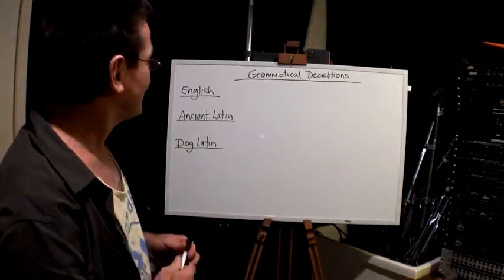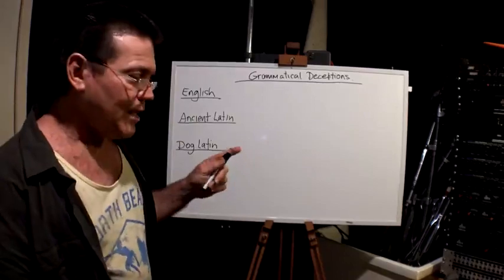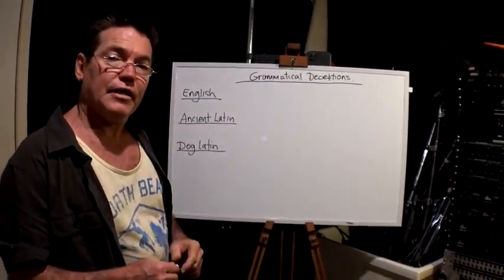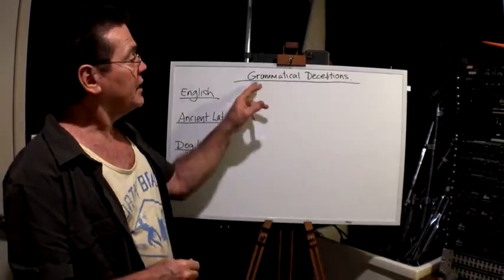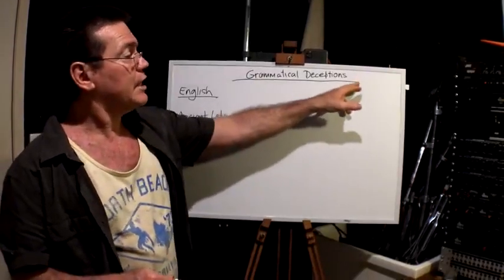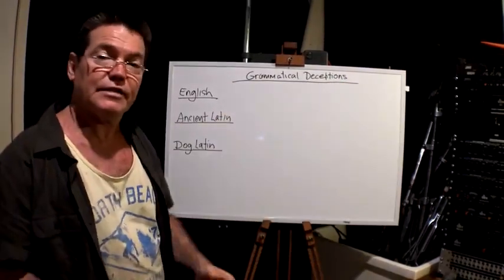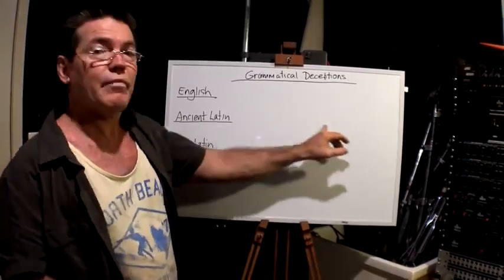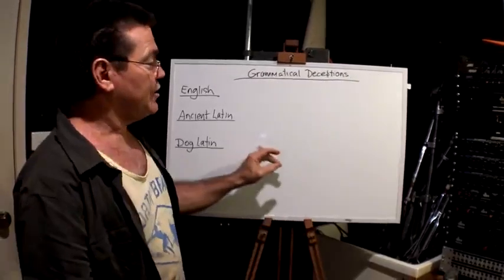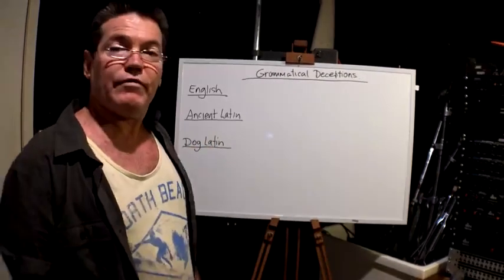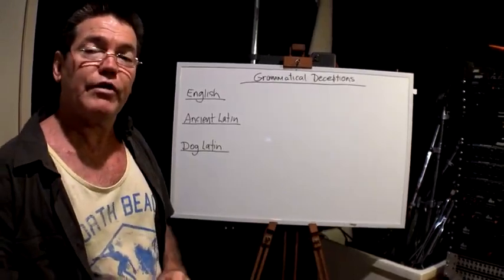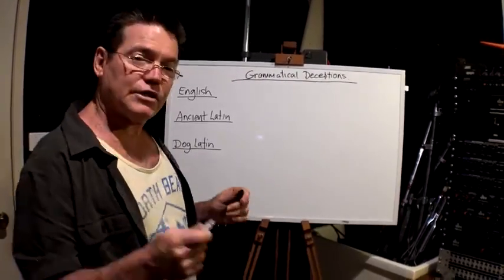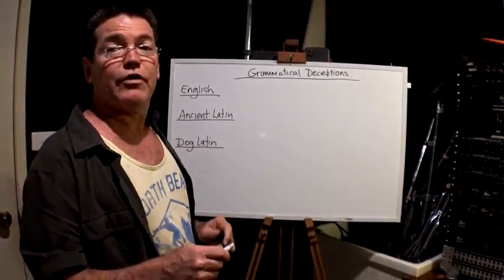I'm going to show you just how dumbed down Australians have become in a grammatical sense. I'm going to write 'Commonwealth of Australia' in three different formats and you will assume you can read all three of them. But after I've done this, I'll explain the difference between the three of them.